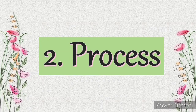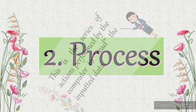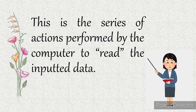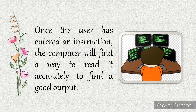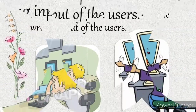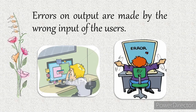The second function of a computer is the process. This is the series of actions performed by the computer to read the inputted data. Once the user has entered an instruction, the computer will find a way to read it accurately to find a good output. Errors on output are made by the wrong input of the users. Of course, computers cannot understand the human language, which is why the user needs to input his instructions specifically.